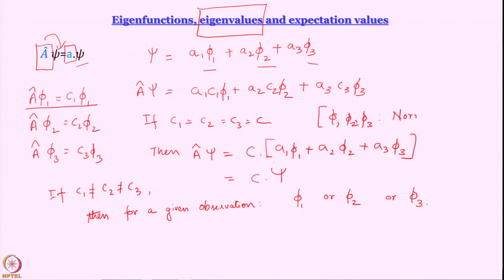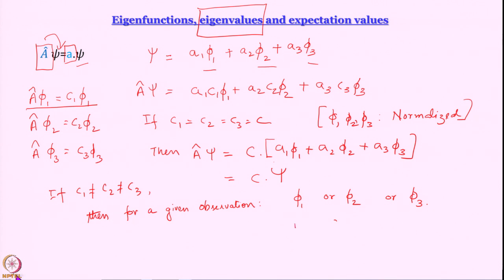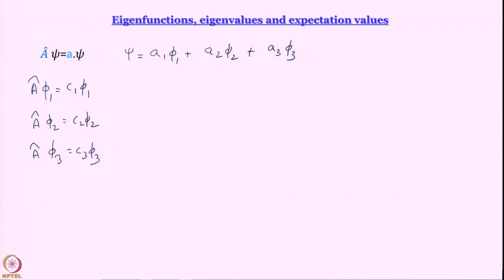The variable A that you measure — for some experiments you are going to see a value of c1, for some you are going to get c2, and for some you are going to see c3. What is the average value that you will get? As we said, you are going to see either c1, c2, or c3 when you perform a particular observation or experiment. What is the average value that you will see?